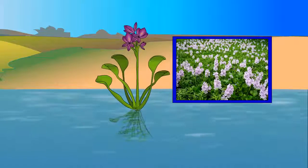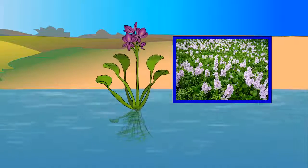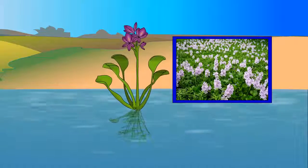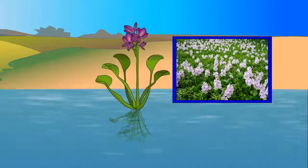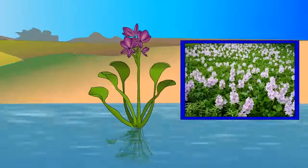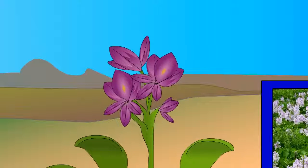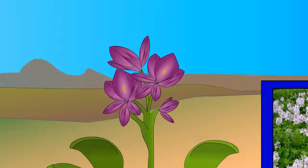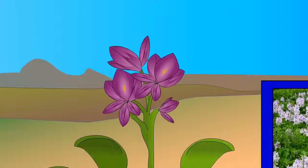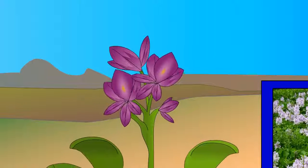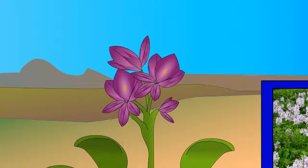Water hyacinth can be seen growing on the surface of lakes and ponds. They have purple flowers. They prevent sunlight and oxygen from entering the water.